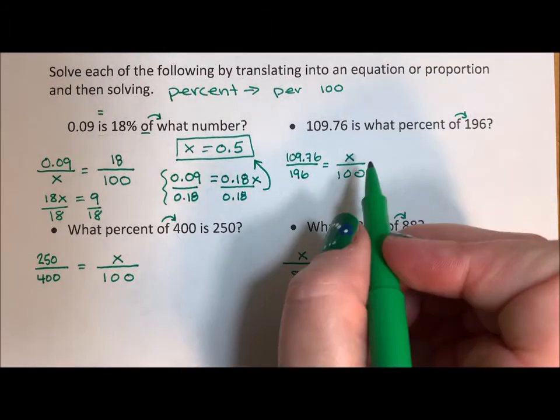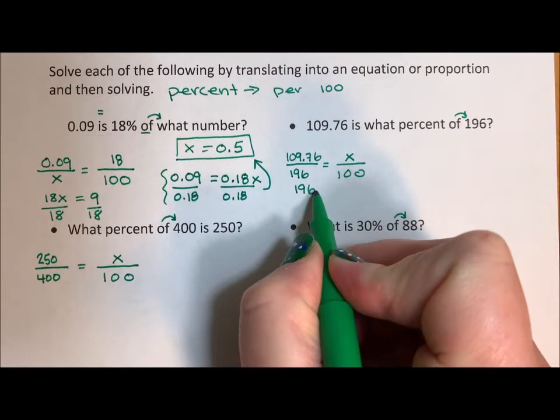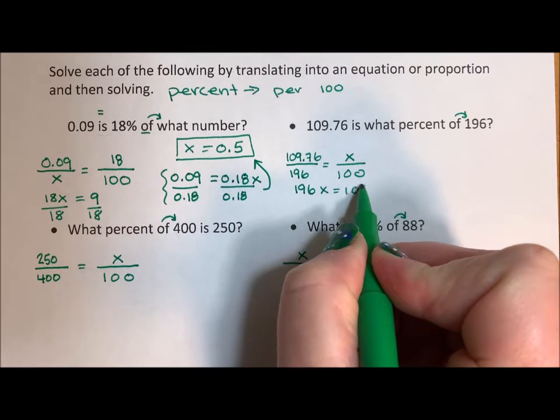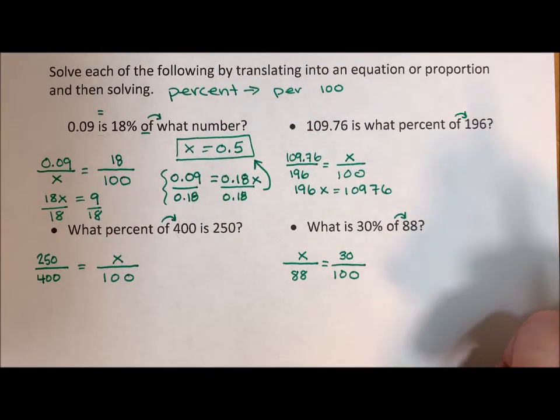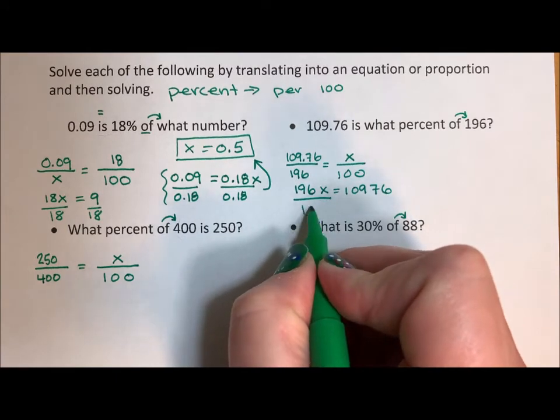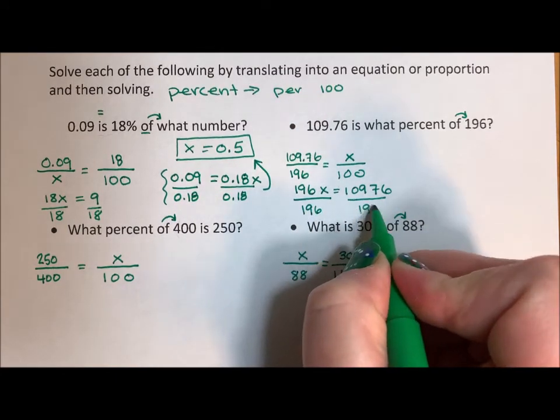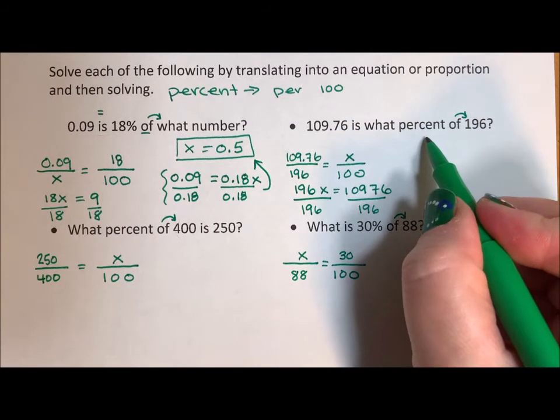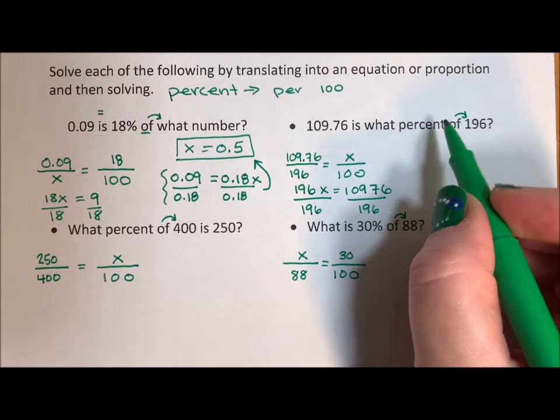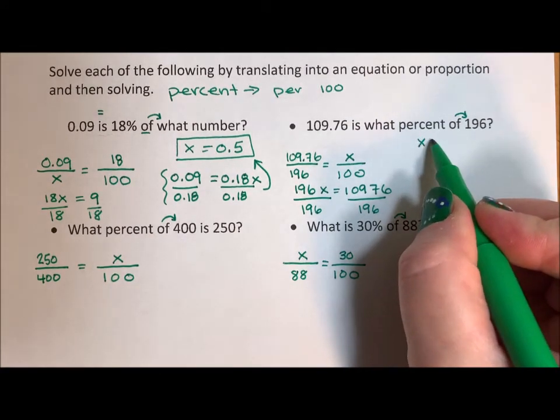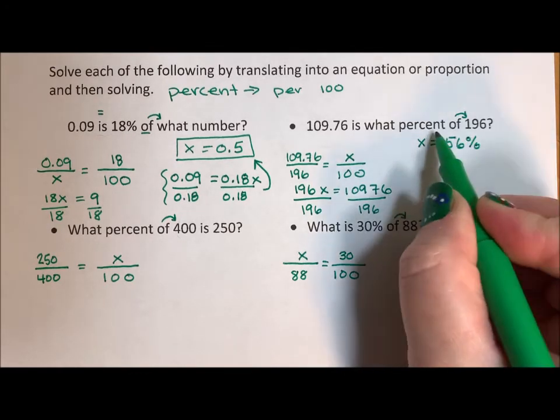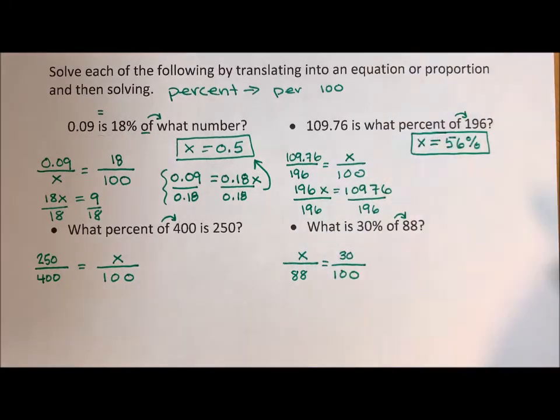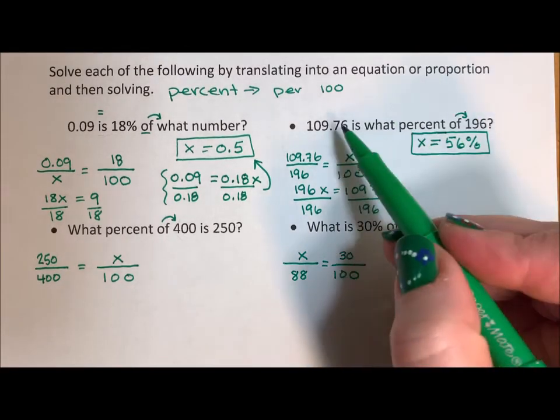Proportion, cross multiply. 196X equals 10976, because when you multiply by 100, your decimal moves over two places. I divide both sides by 196. And when I do that, X is going to equal 56%. There's my answer, 56%.